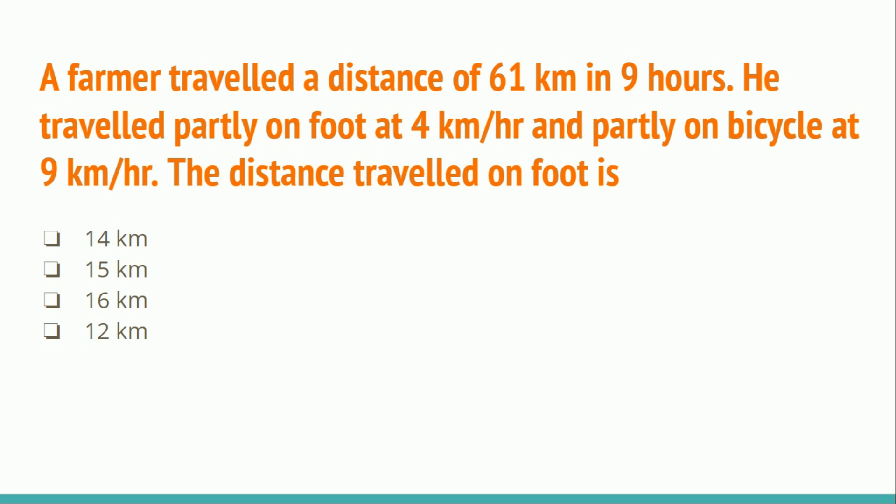The next question is: a farmer traveled a distance of 61 kilometers in 9 hours. He traveled partly on foot at 4 km/hr and partly on bicycle at 9 km/hr. The distance traveled on foot is — 14 km, 15 km, 16 km, or 12 km? Your time starts now.